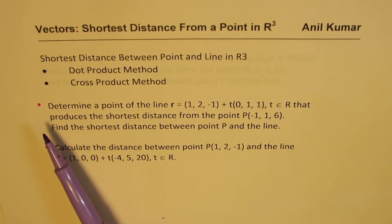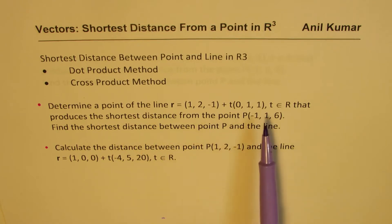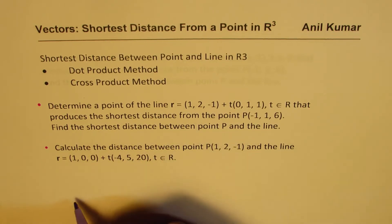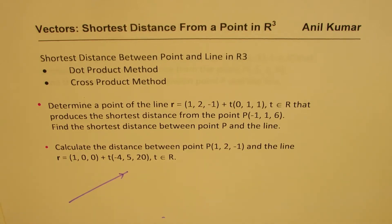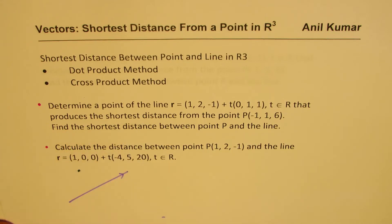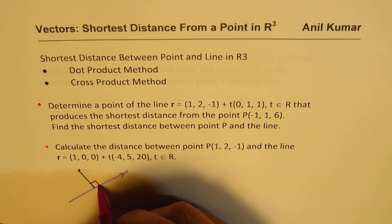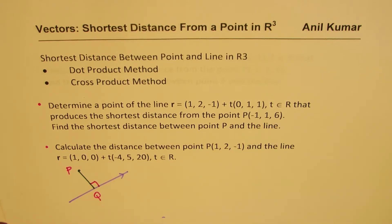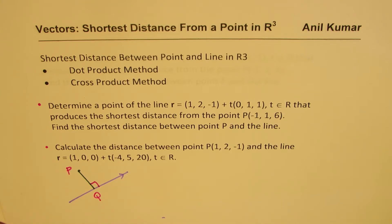Let's look at these two questions. Question number one: determine a point on the line that produces the shortest distance from the point, and find the shortest distance between the point and the line. If the question clearly says we have a line and an external point P, we need to determine a point on the line — meaning we have to find a point which is on the normal of the line. So if I'm given a point P, I need to find Q. When you find the point Q, you can find the distance also. So this type of question should be solved using the dot product.